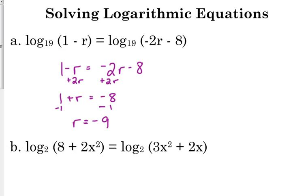And you should always plug it back in to make sure that you don't get a negative number. 1 minus negative 9, we're good. That gives us 10. Negative 2 times negative 9 minus 8, that gives us 10. So we're okay. r equals negative 9 is our solution.